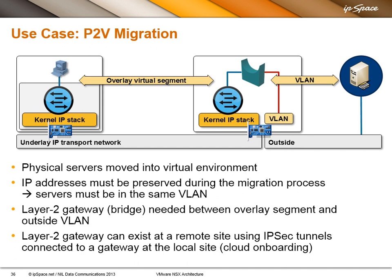Even though I would totally discourage that, I do recognize that there are cases where you need a layer 2 gateway with a remote site. For example, a customer migrating a workload into the cloud — eventually all the workload will be in the cloud. But still, as they are migrating things across, they can't migrate everything at once, and so they have layer 2 connectivity.